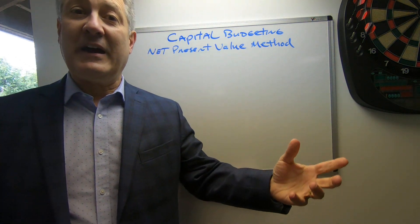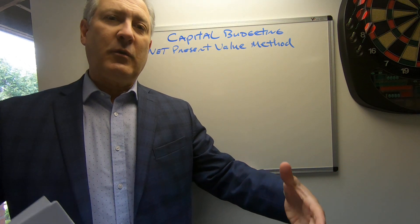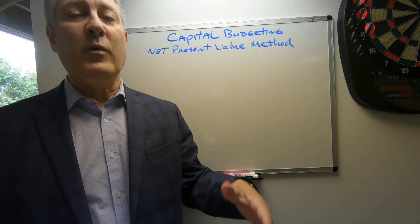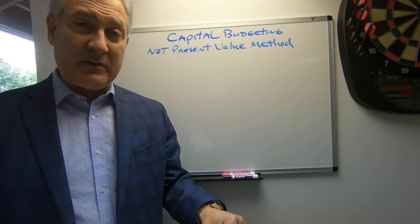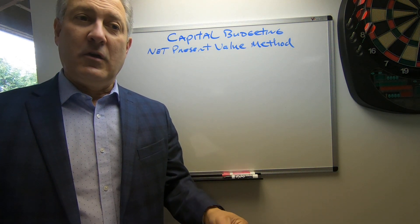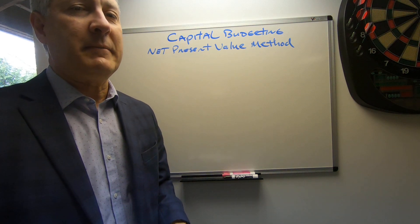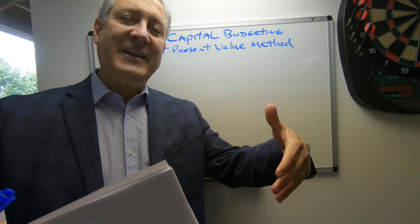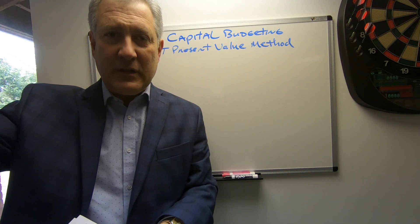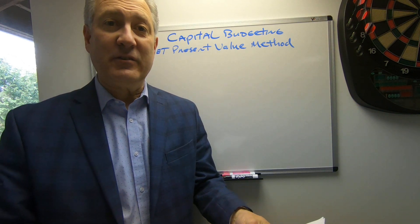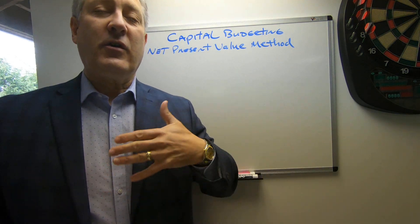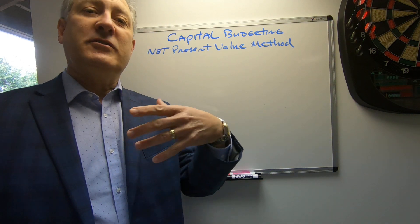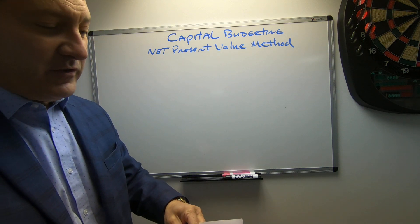The useful life of an asset could be three, five, ten, or fifteen years. We need to consider all the cash flows associated with the capital investment and make a decision. We need to look at the present value of those cash flows — what that cash flow is worth in today's dollars, not future dollars, but present value dollars. I would refer you back to the time value of money lecture to bring you up to speed.